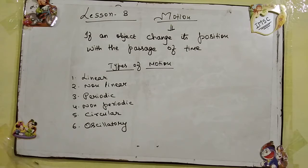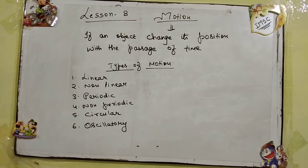First is linear motion. As the name suggests, it is motion in a line. The motion which occurs in a straight line is known as linear motion. For example, the movement of a car on a road is a linear motion.